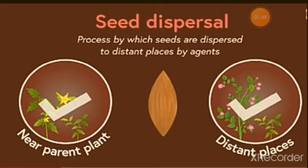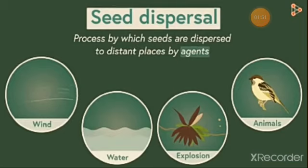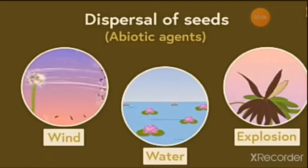Who are these agents? Seeds are transferred to various places by factors such as the wind, water, explosion and animals. These agents make the process of dispersal of seeds easier. Now, let's discuss abiotic agents first.